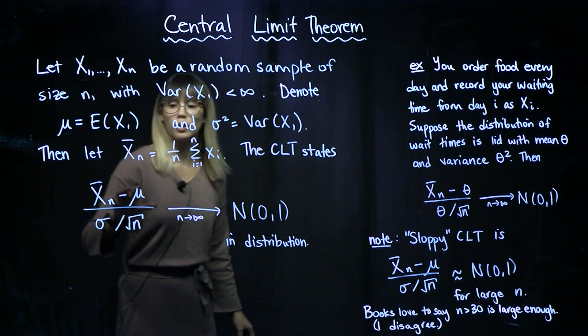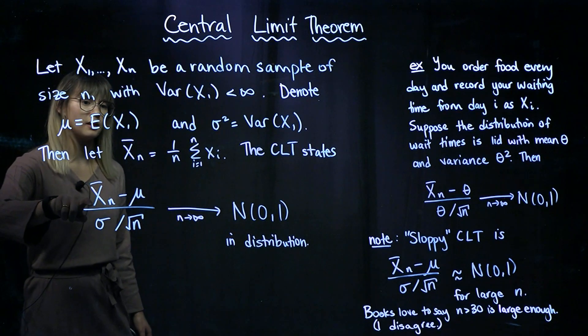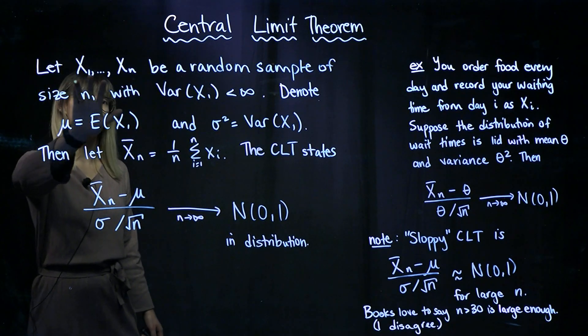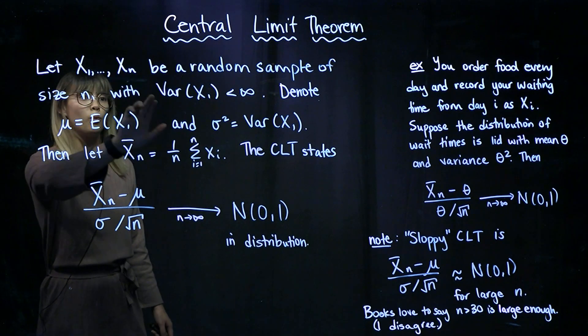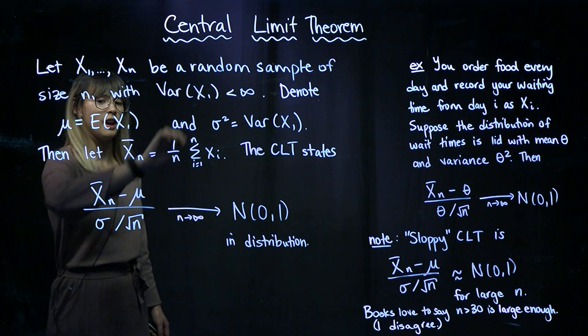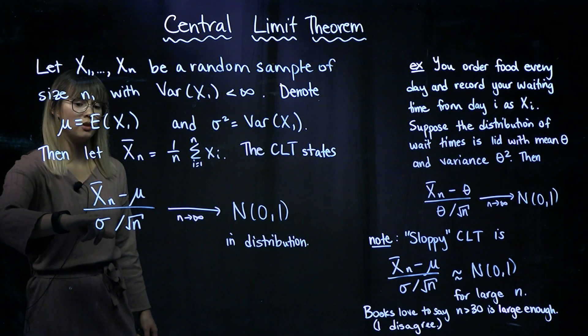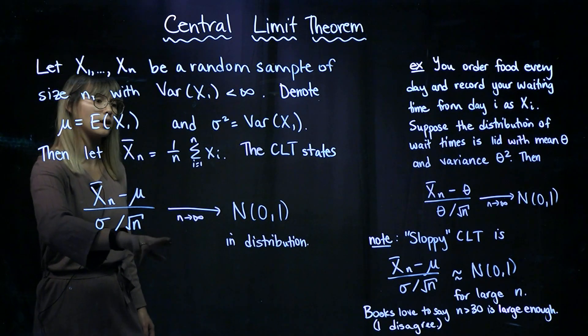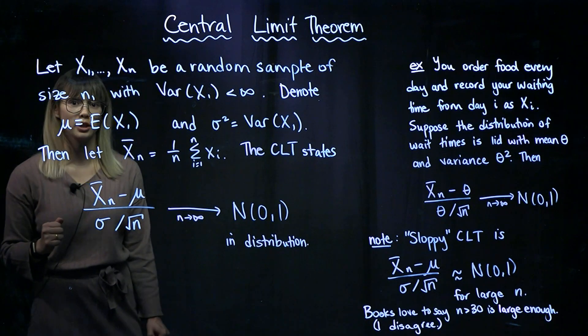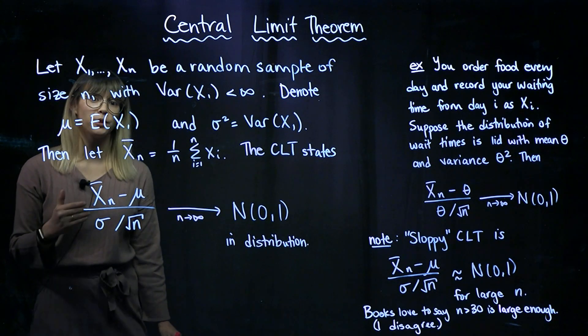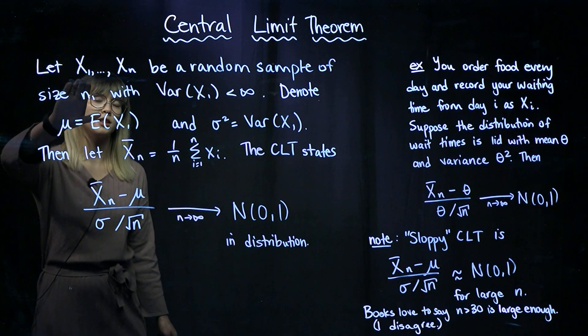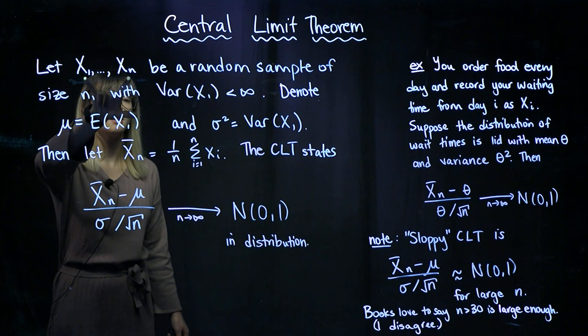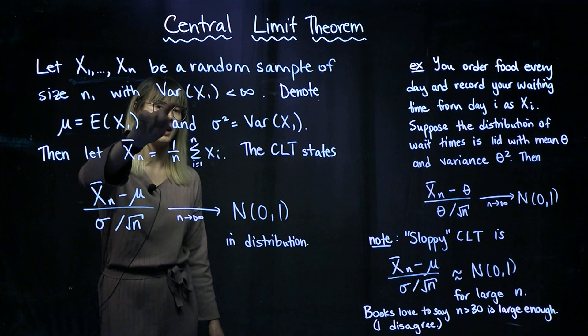Alright, so again, what is this saying? If we have any random variables that are iid with finite variance, then x bar n minus mu over sigma over root n is going to converge to a standard normal distribution. Now this is a very powerful theorem, because we don't have any distributional assumptions on these x's, besides the fact that we need finite variance.